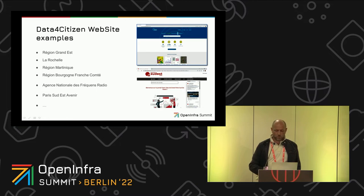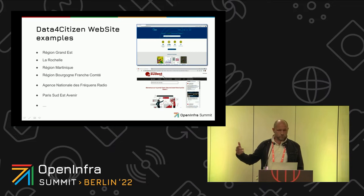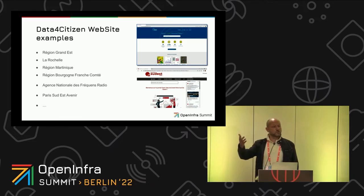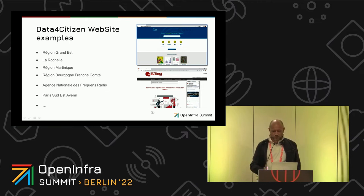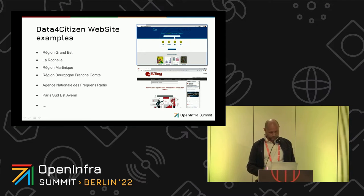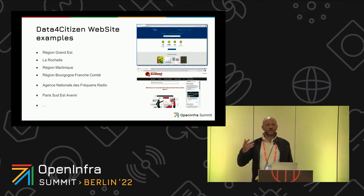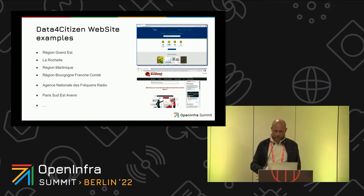That's our Data for Citizen open info platform. Some website examples: Paris, Grand Paris — you'll hear a lot about Grand Paris because in two years we have the Olympic Games — and Grand Est region, close to Germany. All those websites are about data: data visualization, data on maps, data publication.